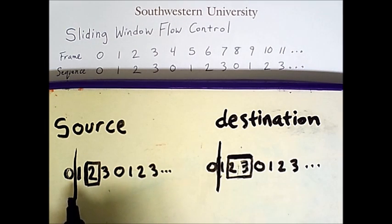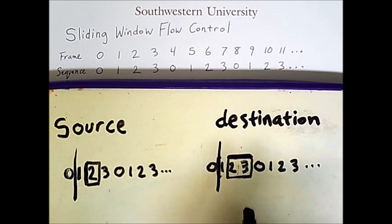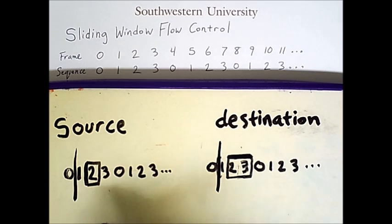It does not move past the 1 because the destination has not acknowledged receipt of frame 1 yet. It said it was ready to receive 1, but that does not indicate that it had yet received it.